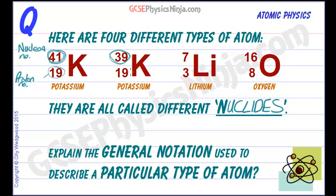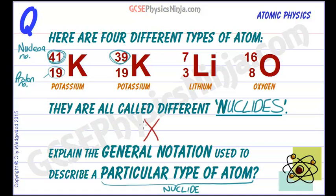These are all different nuclides. The general notation used to describe a particular type of atom or a nuclide is like this. The element is denoted with an X — rather like in algebra, where you denote an unknown number by X, it could be any value. This X can be any of these symbols: oxygen, lithium, potassium.